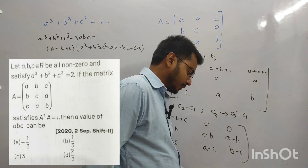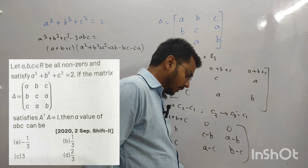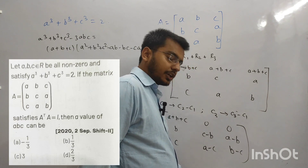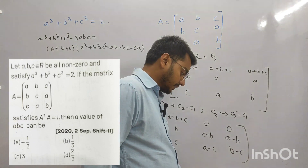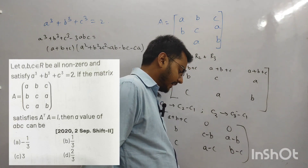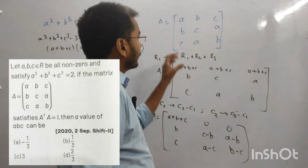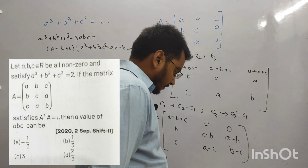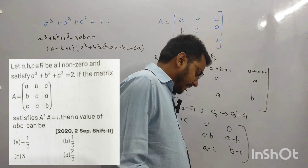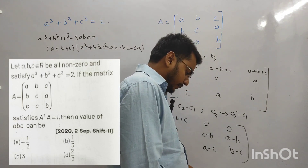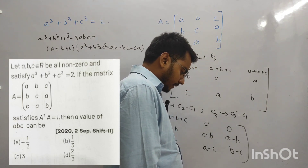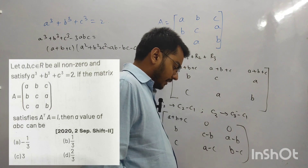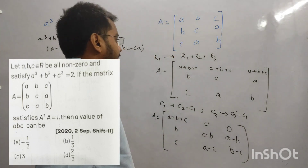Let A, B, C belong to R, all non-zero, and satisfy a³ + b³ + c³ = 2. The matrix A with entries satisfies A transpose times A = I. Then the value of ABC can be?